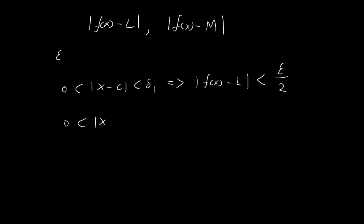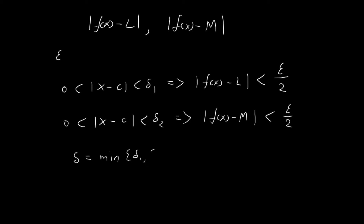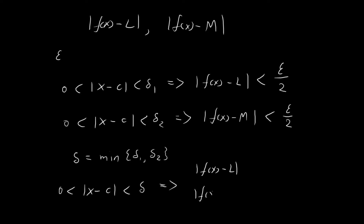I can do the same thing for M: there exists a number delta 2 such that f of x minus M is always smaller than epsilon over 2. Now I define delta to be the minimum of delta 1 and delta 2. Since delta is that minimum, if x is within a distance of delta from c, this implies that both f of x minus L and f of x minus M must both be smaller than epsilon over 2.